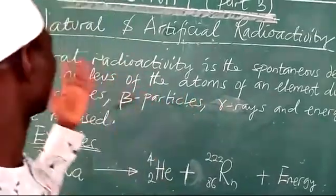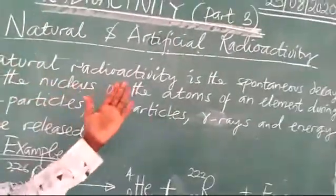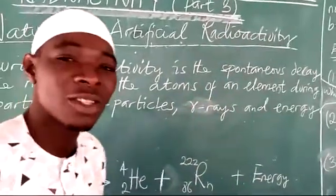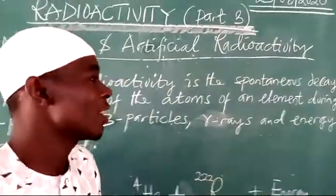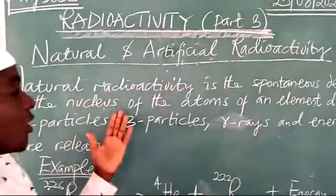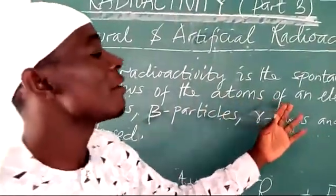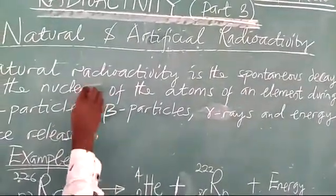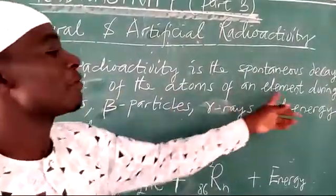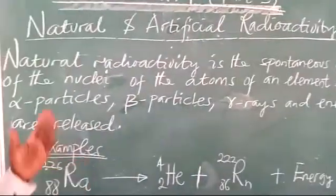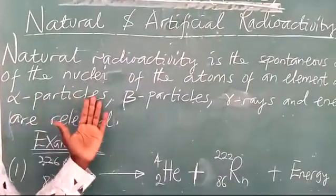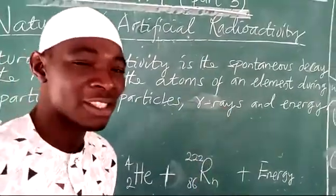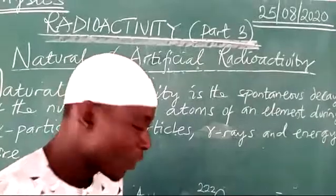We have some examples here. Natural radioactivity is the spontaneous decay — decay means disintegration, breaking up, splitting apart — of the nuclei of the atoms of an element, during which alpha particles or beta particles or gamma rays and energy are released.